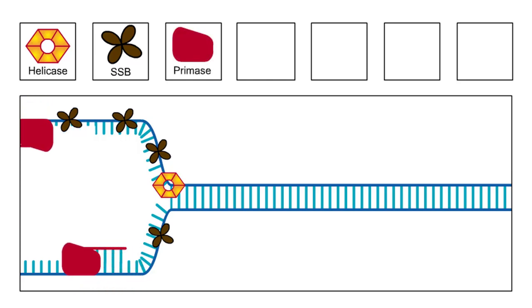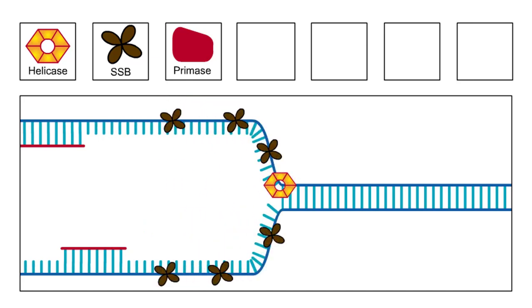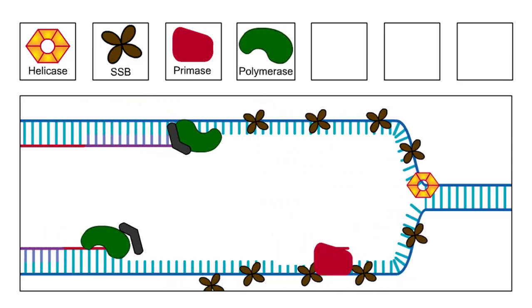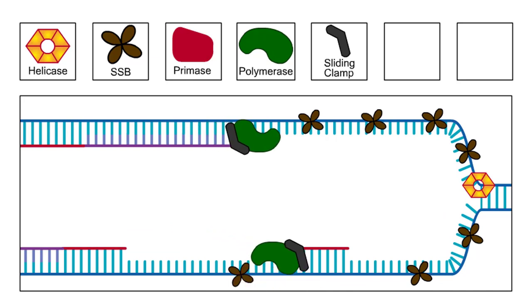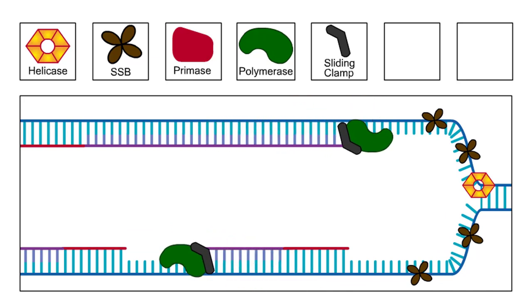Primase is an RNA polymerase that synthesizes the short RNA primers needed to start the strand replication process. DNA polymerase is a hand-shaped enzyme that strings nucleotides together to form a DNA strand. The sliding clamp is an accessory protein that helps hold the DNA polymerase onto the DNA strand during replication.